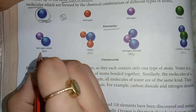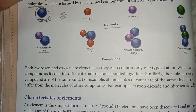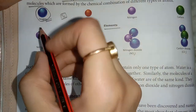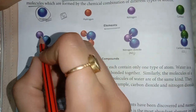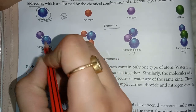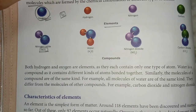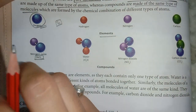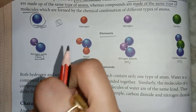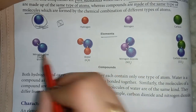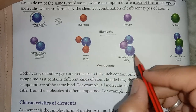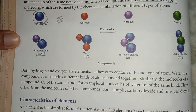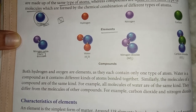Two or more elements are joined by chemical combination to form a new substance called a compound. For example, in water, hydrogen and oxygen atoms combine; in nitrogen dioxide, nitrogen and oxygen combine; and in carbon dioxide similarly. Remember: elements and compounds are both pure substances. Elements are made of one type of atom; compounds combine two or more types of atoms.